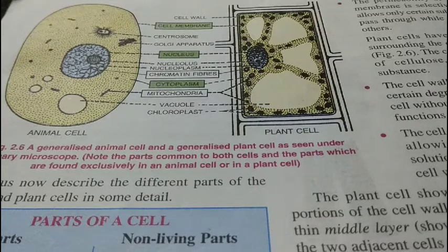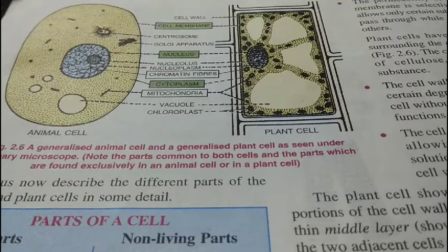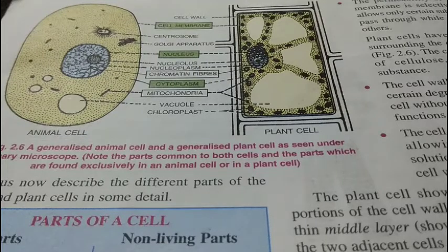There are different types of living parts found inside the cell: cell membrane, mitochondria, ribosomes, lysosomes, Golgi apparatus, endoplasmic reticulum, nuclear membrane, nucleus, and chromatin fibers.